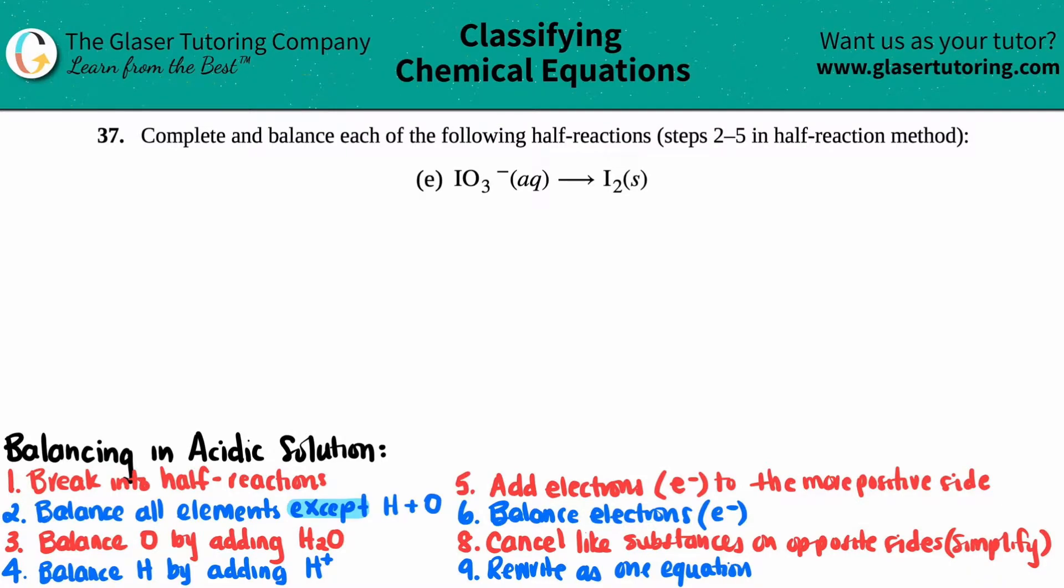Number 37, complete and balance each of the following half reactions, which is step 2 through 5 in the half reaction method. We have IO₃⁻ aqueous, which yields I₂ solid.